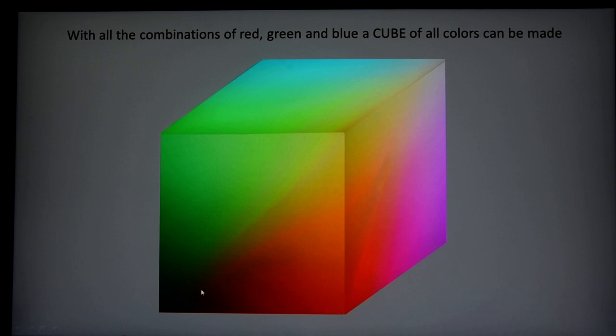With these combinations of values between 0 and 1, we can make all the colors in the world, or approximately all the colors. And we can put them in a cube with the red, the green, and in the third dimension into the screen, the blue light.